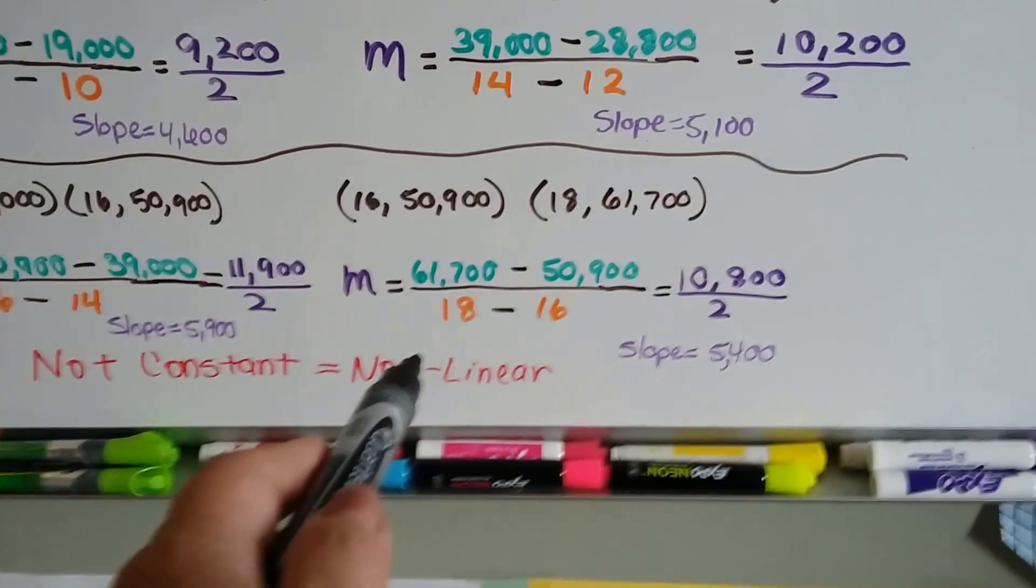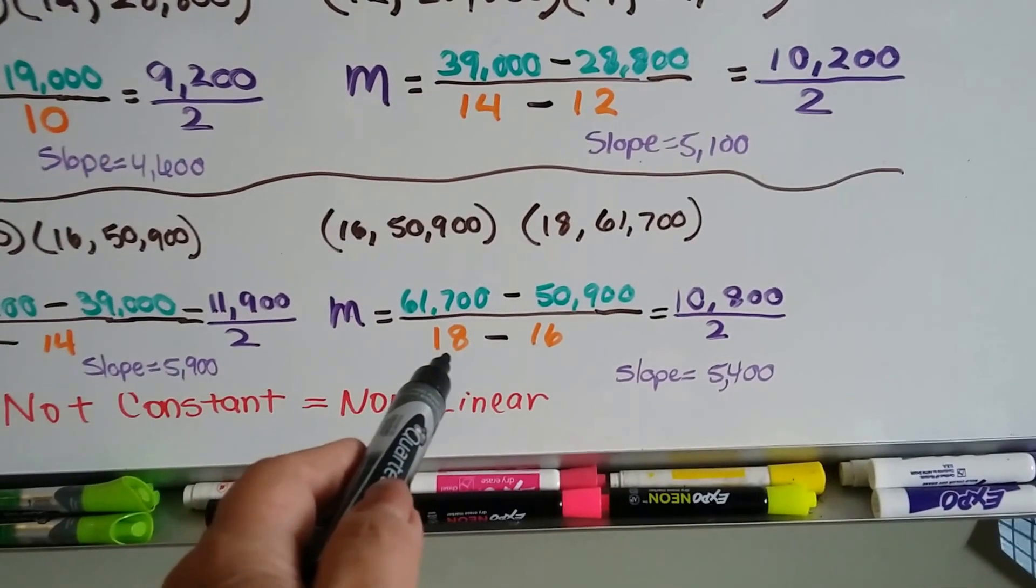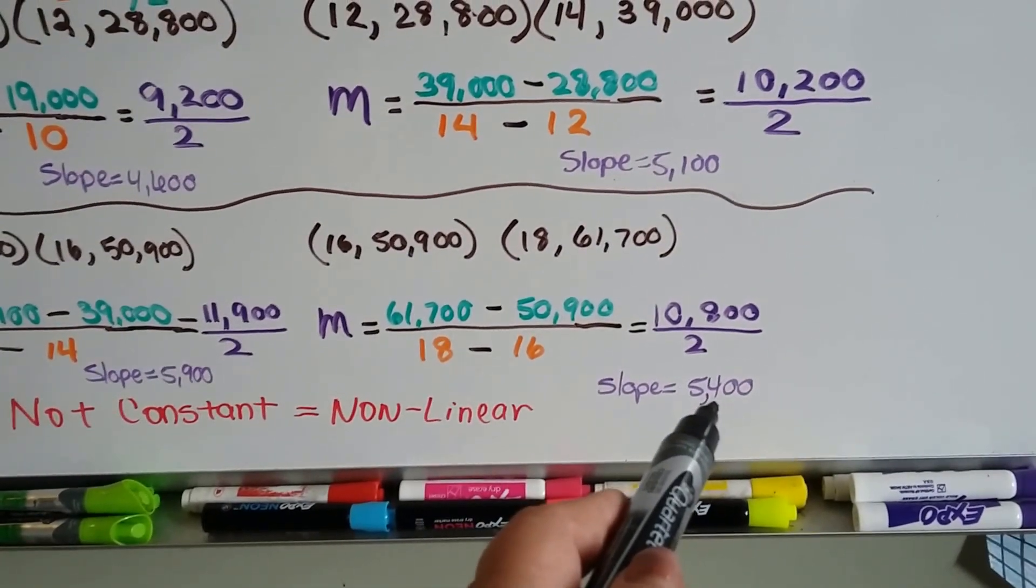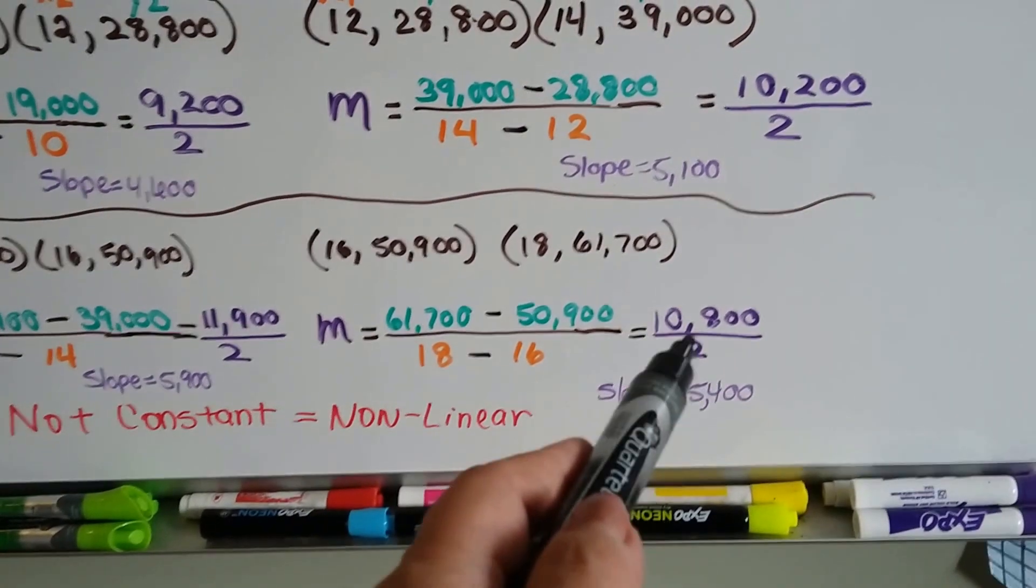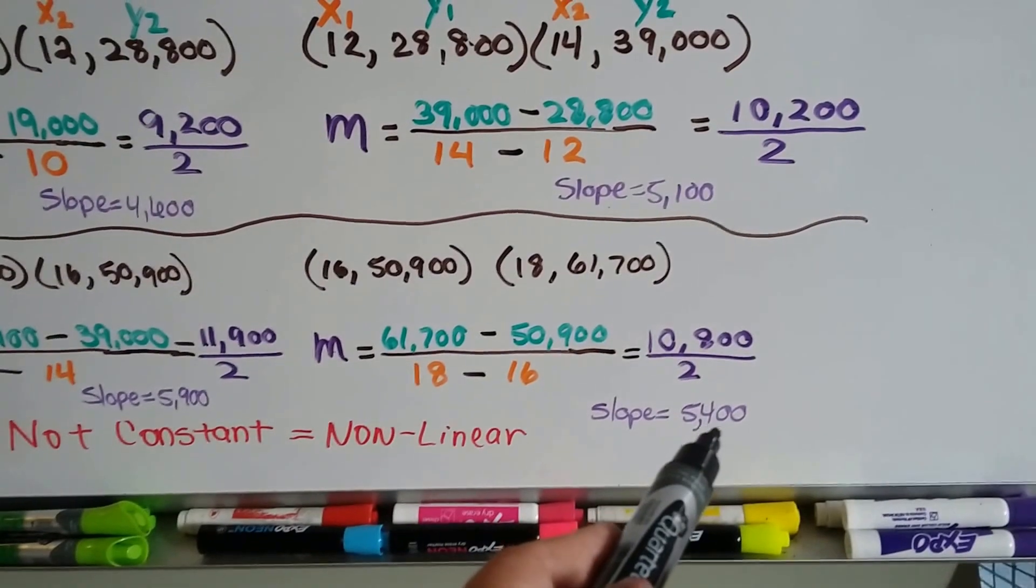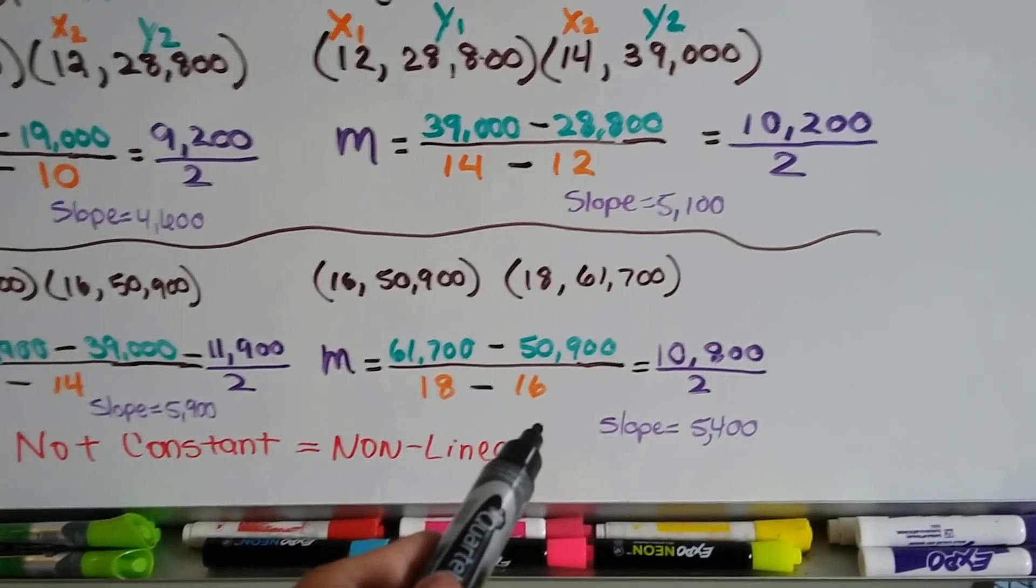And then someone that's got a master's degree, that's 18 years of school, they're going to make, on average, $5,400 a year more for each year of school that they went to. They're going to make $5,400 a year more than someone that just has a bachelor's degree.